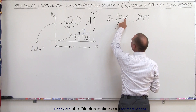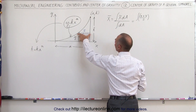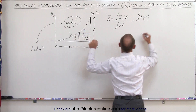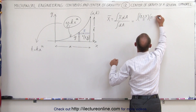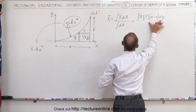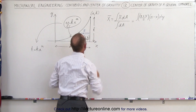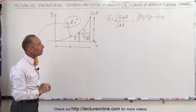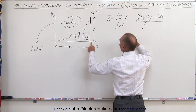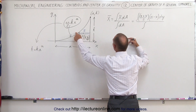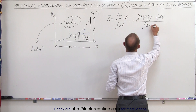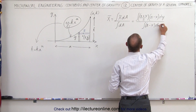We multiply that times dA. dA would be the length times the width. The width would be dY, and the length would be a minus x. So that would be a minus x times dY — that is equivalent to the small little strip, the dA of that strip right there. And then we divide that by the integral of dA, which again would be a minus x times dY.